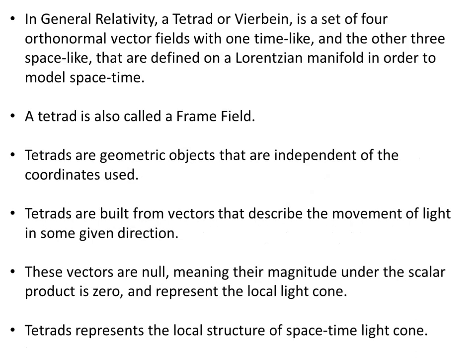In general relativity, a tetrad or vierbein is a set of four orthonormal vector fields — one time-like and three space-like — defined on a Lorentzian manifold to model spacetime. Locally, the speed of light is c and the light cones are upright in their usual Lorentzian form. A tetrad is also called a frame field, and tetrads are geometric objects independent of the coordinates used — a useful property since physics should be coordinate-independent.